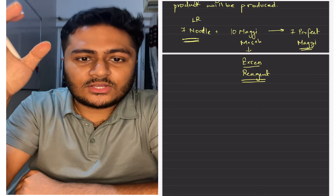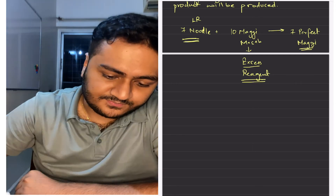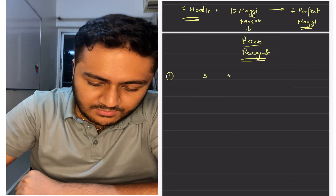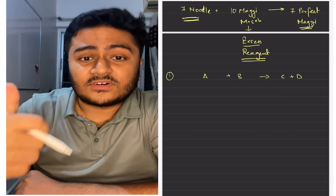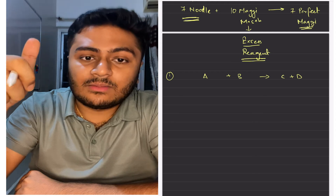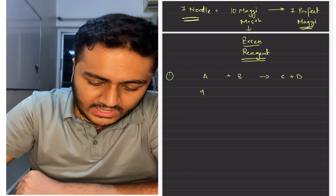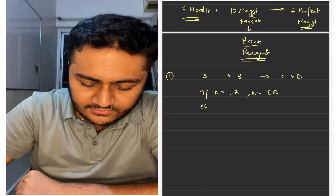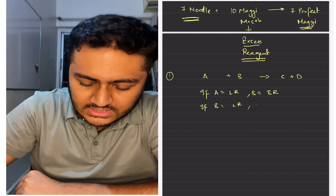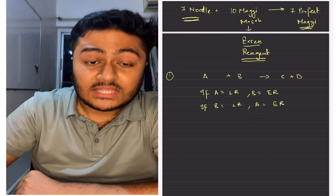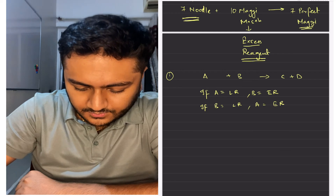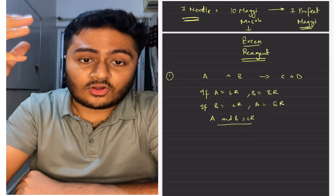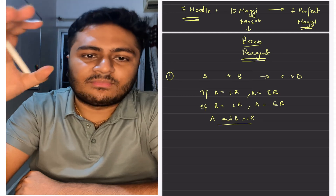In any particular reaction there are three possibilities. Let's say we take an example where A and B react to form C and D. The first step will be to identify who is the limiting reagent. If A is the limiting reagent then B will be the excess reagent, and if B is the limiting reagent then A will be the excess reagent. There is also a possibility where both A and B are limiting reagents. But first, let's talk about how to identify a limiting reagent.